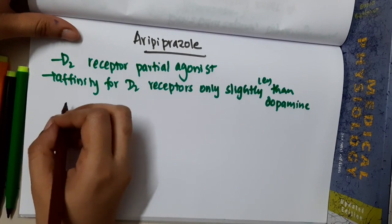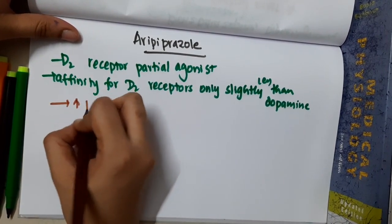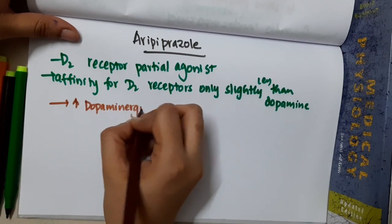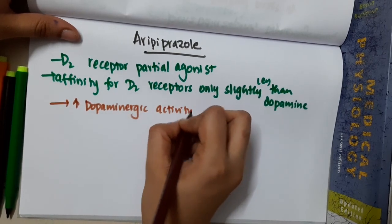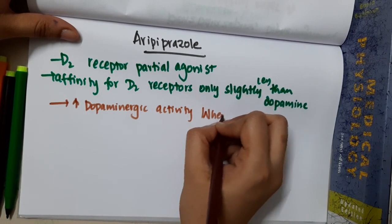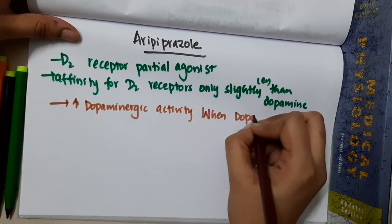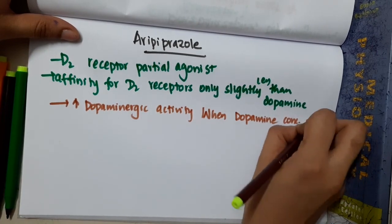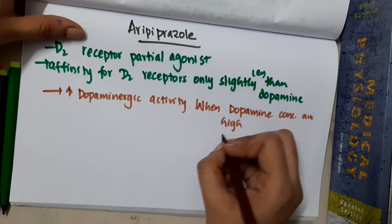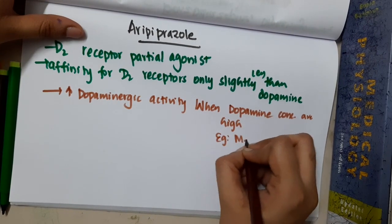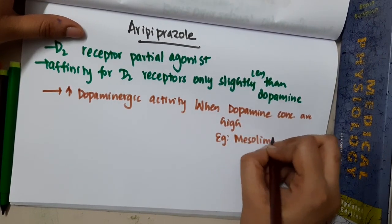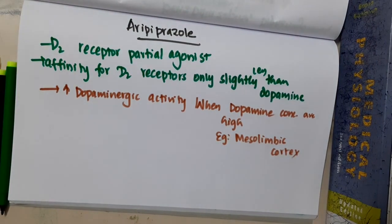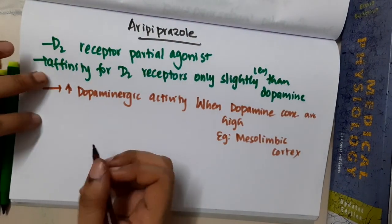Aripiprazole has a unique action: it modulates dopaminergic activity based on dopamine concentration. When dopamine concentrations are high — for example in the mesolimbic tract — it decreases dopaminergic activity in those areas.